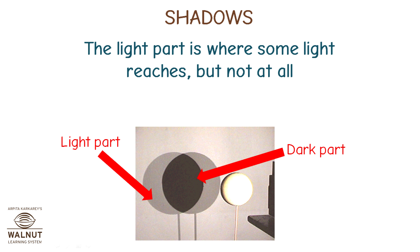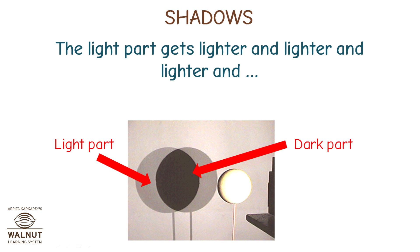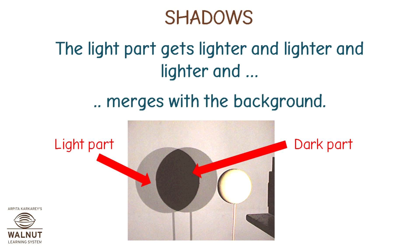The light part is where some light reaches, but not fully. It is also called penumbra. The light part gets lighter and lighter and merges with the background.